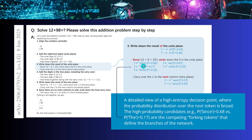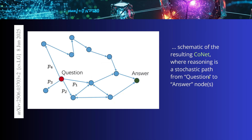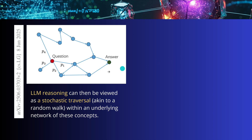For example, a high-probability candidate token has a probability of 0.68, while another has only 0.1. So you see, the competing forking tokens define the branches of the network. This is a completely different but very powerful way to see this, because if we abstract further, what we get is exactly a CONAT — where you have a question and an answer, and then a stochastic path on this new concept network.